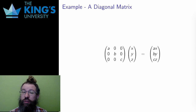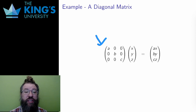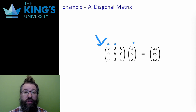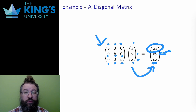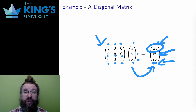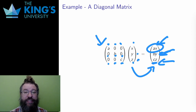What about a general diagonal matrix? A diagonal matrix has possibly non-zero entries on the diagonal but zeros elsewhere. The matrix action gives: first row yields ax, second row yields by, and third row yields cz. This matrix stretches or shrinks each entry: x is stretched by a factor of a, y by a factor of b, and z by a factor of c. This is called a dilation transformation — each axis is dilated by a factor.